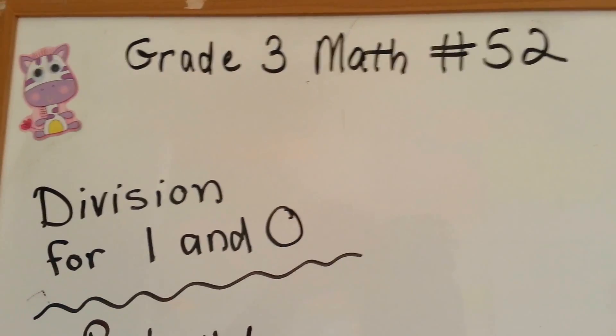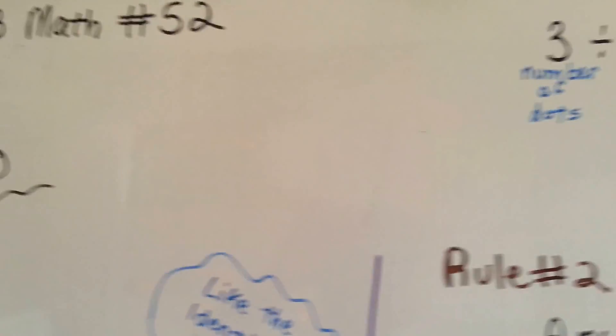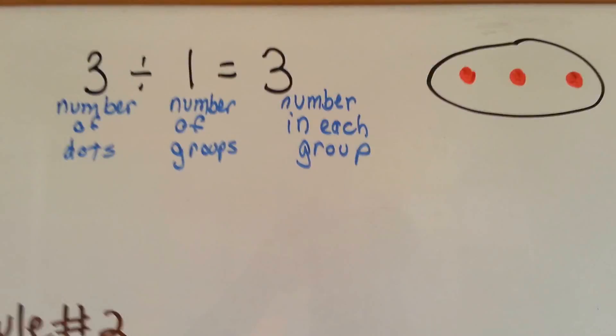There are four rules that we need to remember for 1 and 0 when we divide, and we're going to go over that in a second.